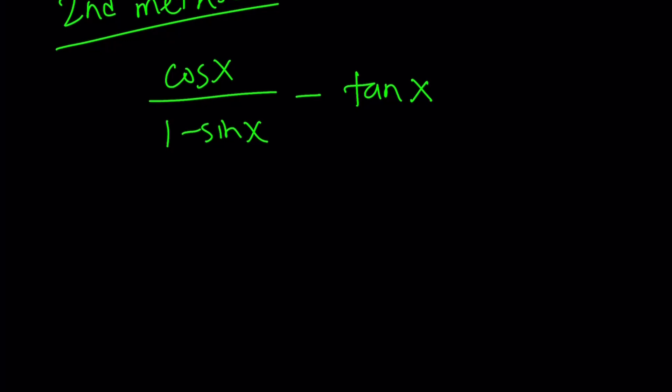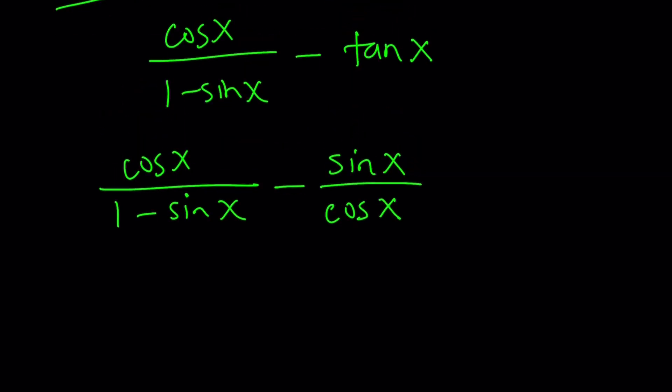So we're going to do something different here. First, like before, let's write tangent as sine over cosine. That's also another important identity in trigonometry. Now, what do you think about this expression? We have two fractions with different denominators and you want to subtract them, right?